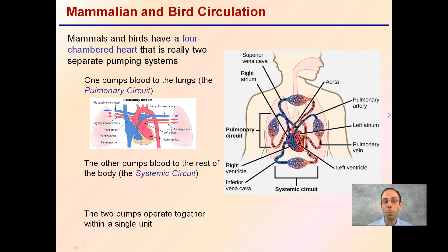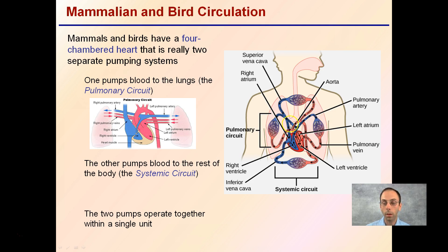The mammalian or bird circulation all take advantage of this four-chambered heart. So while we're focusing on humans, a lot of the same would apply to mammals and birds. One portion of the heart pumps blood to the lungs — this is called the pulmonary circuit. See here, pulmonary arteries.